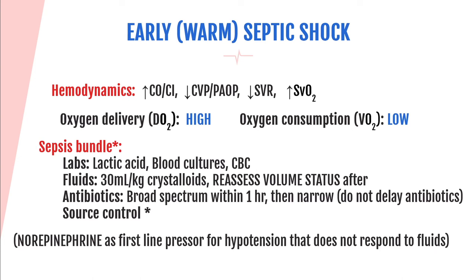Question number three: a patient with an acute anterior MI has a PA catheter with the following hemodynamic values — cardiac index of 1.8, PAOP of 18 mmHg, SVO2 of 48%, and SVR of 1820. Which of the following would be most appropriate? A: start a norepinephrine infusion, B: start a dobutamine infusion, C: start a 1-liter 0.9% NS bolus over two hours, or D: increase the afterload?